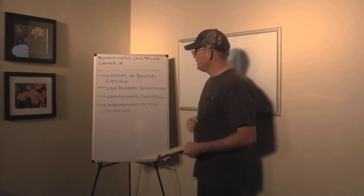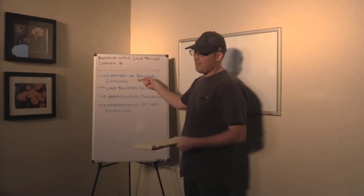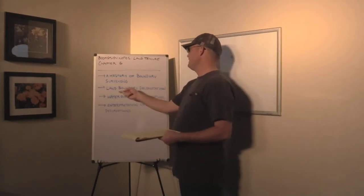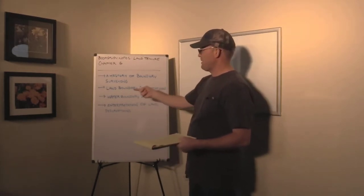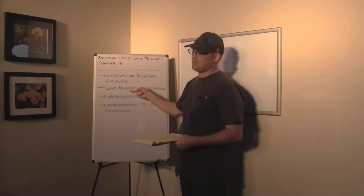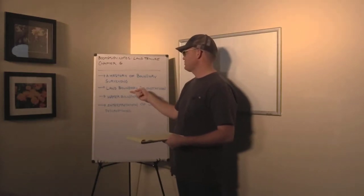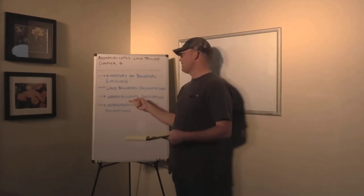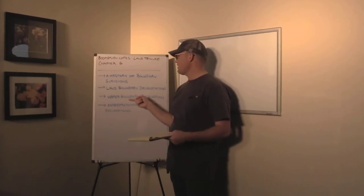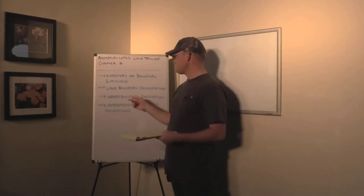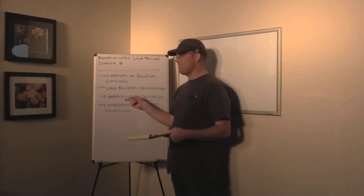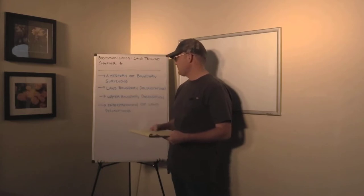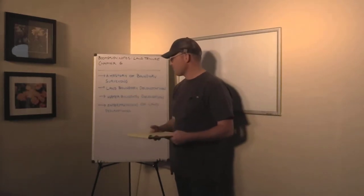In chapter six of Land Tenure, the authors talk about a history of boundary surveying. They go through several pages — an excellent summary of the history of boundary surveying all the way back to ancient times. Then they talk about land boundary delimitation, which basically means boundary surveying — what it is and what are the types of boundary surveys. Then they've got a whole section on water boundary delineation. It's a big chunk of the chapter. It may be because water boundaries are so common throughout the world that they felt they needed to spend quite a bit of time on them.